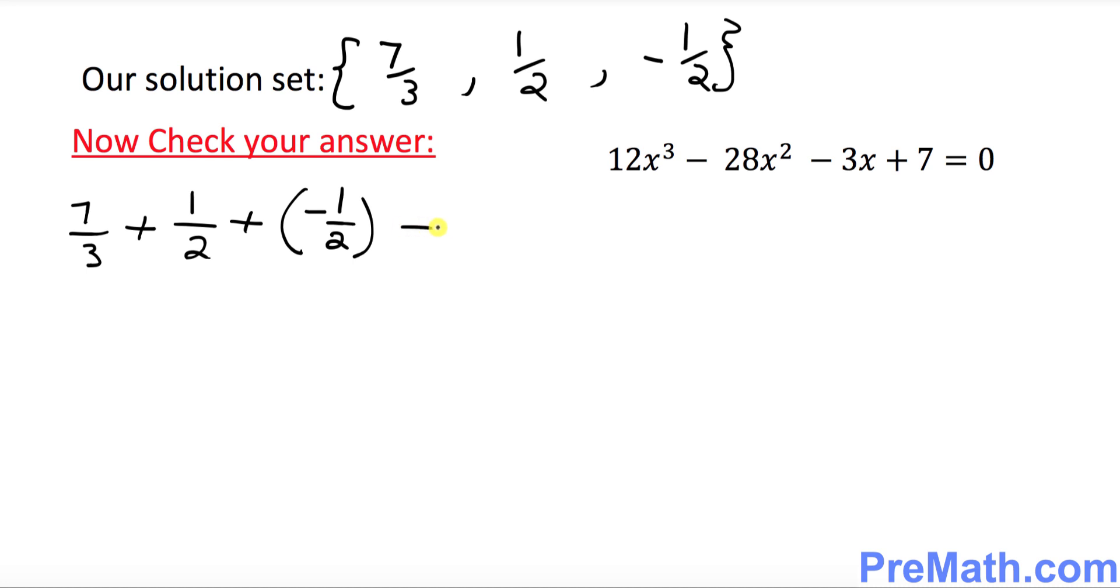And I want you to see whether it is equal to minus b over a. Now you might be wondering what is a, b. So this part over here, this 12 is your a. This negative 28 is your b. This is your c. And this is your d part.